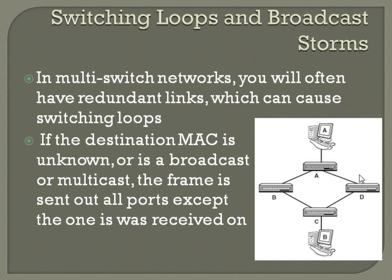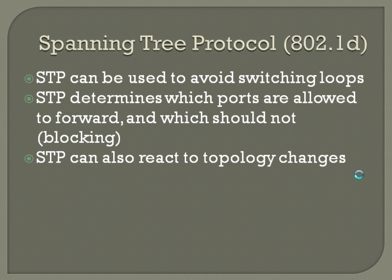To prevent switching loops, they came up with a protocol known as Spanning Tree Protocol — 802.1D, or STP. STP can be used to avoid switching loops by determining which ports are allowed to forward and which should be blocking. STP can also react to topology changes if a link or switch goes down, so it knows how to get frames to the proper switch and ultimate endpoint in the network.